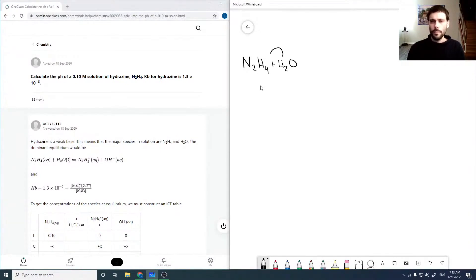So that would be hydrogen donation this way to give us N2H5 plus, plus OH minus. So we're given that our Kb is 1.3 times 10 to the minus 6, and that we're starting with a 0.1 molar solution.